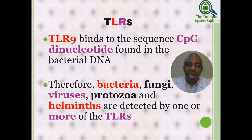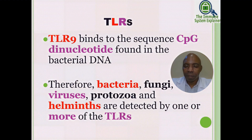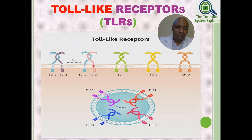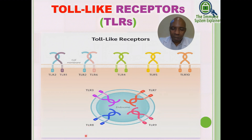TLR9 binds to the CpG dinucleotide sequence found on bacterial DNA. Therefore, bacteria, fungi, viruses, protozoa, and helminths are all detected by one or more of these toll-like receptors. We have pictures here of the TLRs: the TLR2/TLR1 heterodimer, the TLR2/TLR6 heterodimer, the TLR4 homodimer, the TLR5 homodimer which recognizes flagellin, and the TLR10 homodimer. TLR3, TLR7, TLR8, and TLR9 are found within the nuclear membrane of the cell.